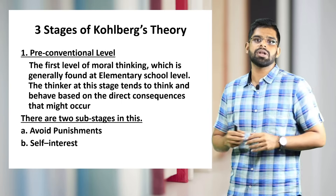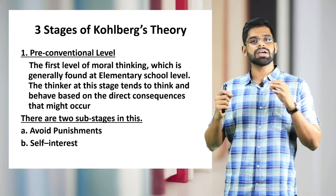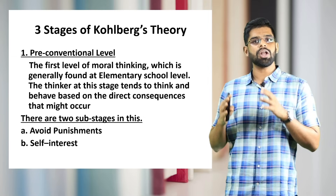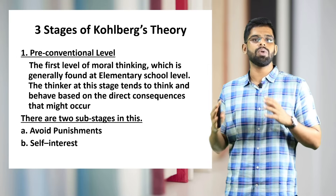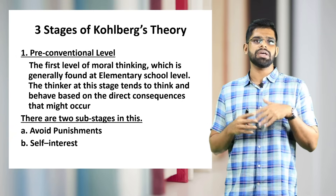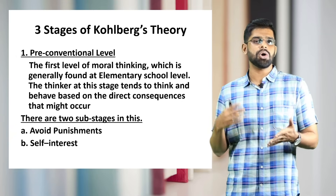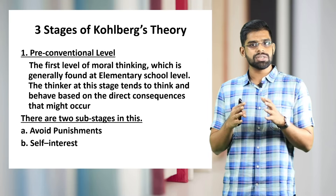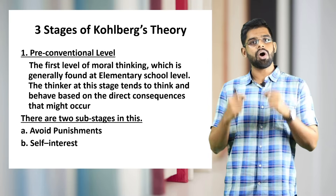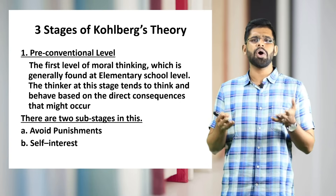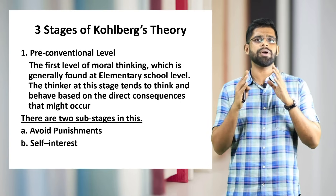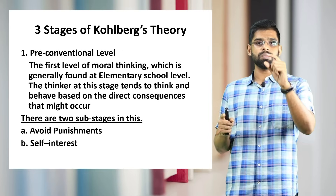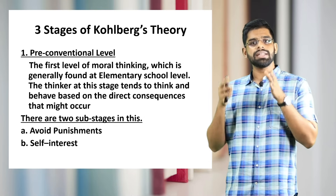Stage one is the pre-conventional level. This is the first level of moral thinking, generally found at the elementary school level — roughly pre-KG up to around fourth standard. The thinker at this stage tends to think and behave based on the direct consequences that might occur, as a young person makes decisions based on those consequences.